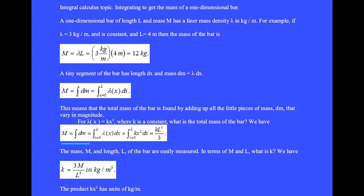We have mass M equals integration over dm, which is the integration of lambda dx from x equals 0 to L. For lambda equals kx squared, this integration gives kL cubed over 3.